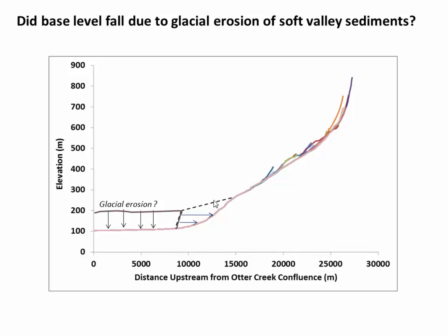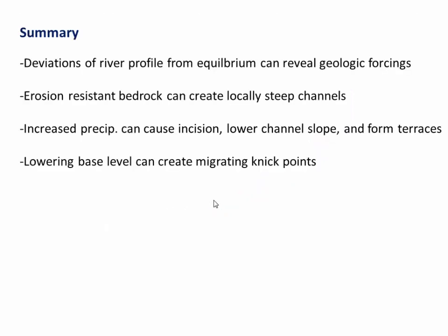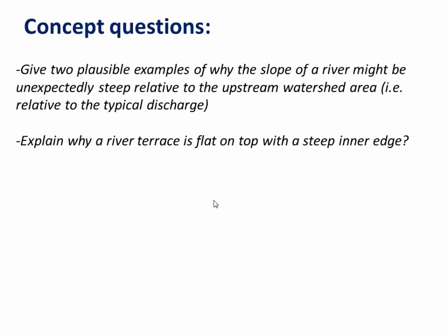In summary, this video has shown that deviations of a river profile from equilibrium can reveal geologic forcings — essentially, the river is speaking to us. Specifically, erosion-resistant bedrock can create locally steep channels. Increased precipitation can cause river incision, lowering channel slope and forming terraces that record climate change. And lowering base level can create over-steepened reaches, leading to migrating nick points that record changes in the system. I'll leave you with two concept questions, which hopefully you can answer after looking at the video again.